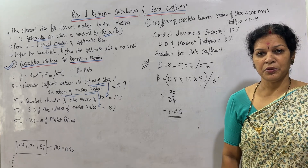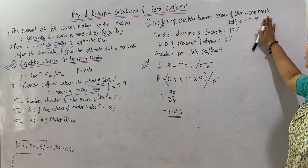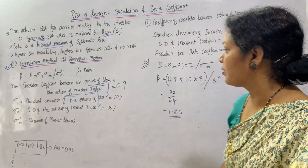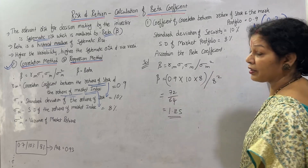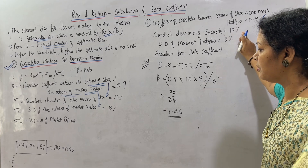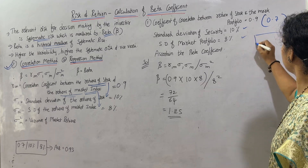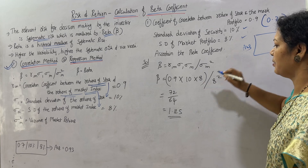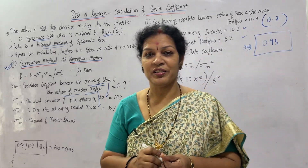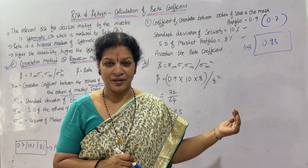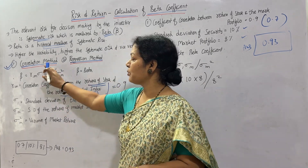One problem is given to you as homework. Same problem but with changed values: take the correlation coefficient as 0.7 instead of 0.9, while the standard deviations remain 10% and 8% as before. Your answer should be 0.93, which means the risk factor is more, because the answer is below 1. Above 1, risk factor is less; below 1, risk factor is more.